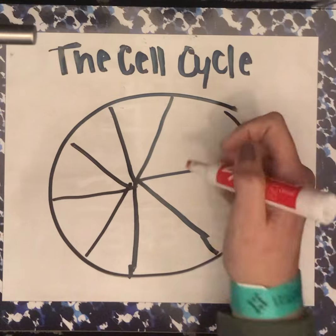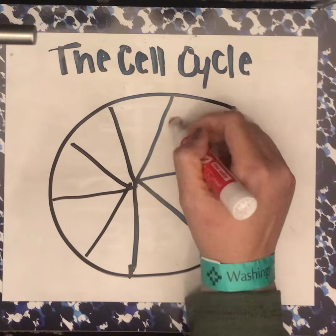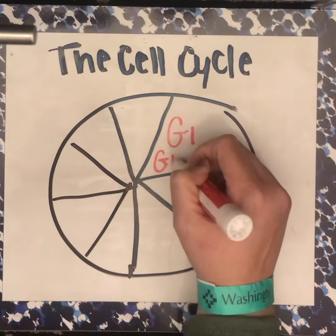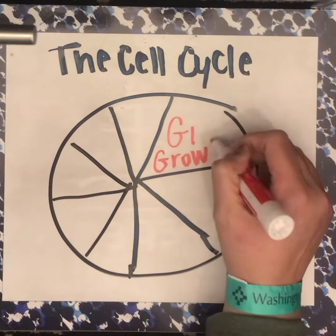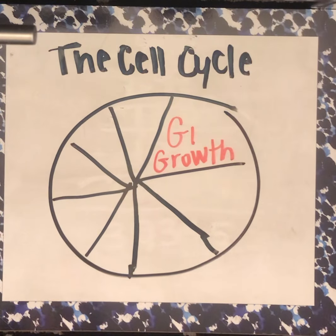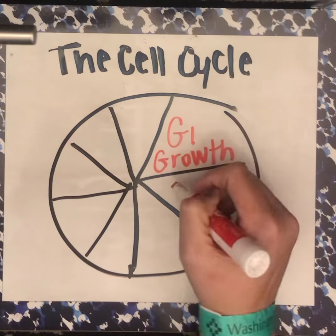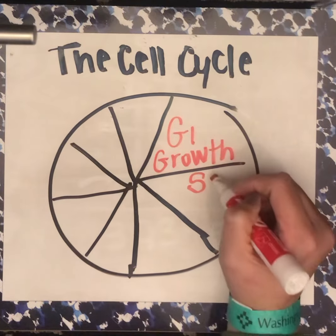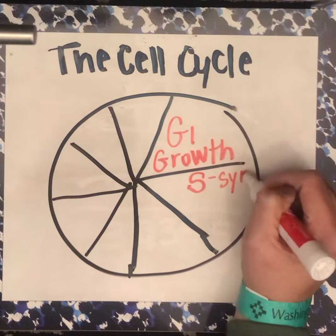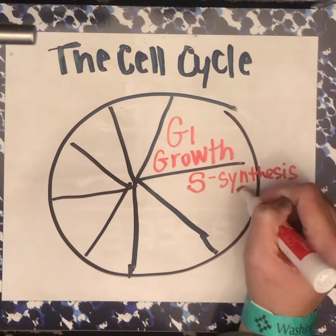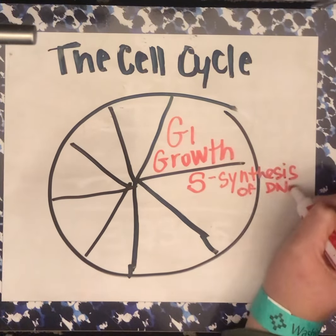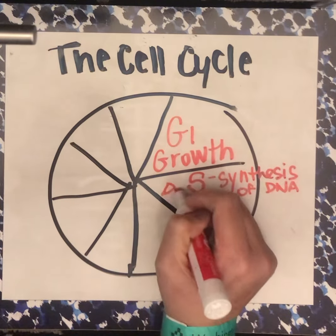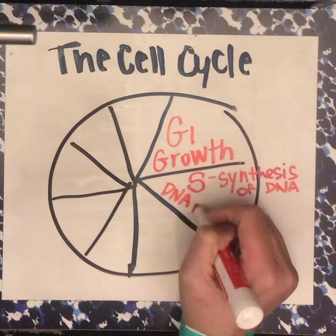So let's start by going through the different parts. The first part of the cell cycle is called G1, and G1 is all about growth — so G1 is where growth happens. The next phase is called the S phase, and the S phase stands for synthesis — synthesis of DNA. So this is actually where DNA is copied.